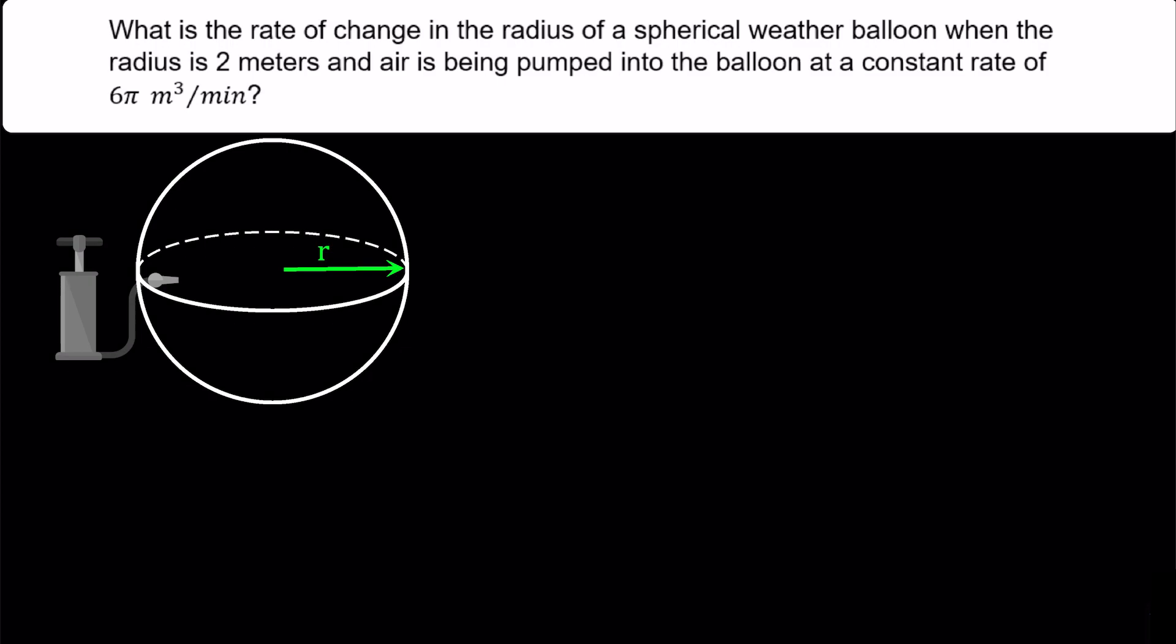Let's find the first of 4 things I mentioned earlier, which is the condition. The given condition in this problem is dV/dt equals 6π m³ per minute. The second thing to find is the question. What are they asking for? They are asking for dr/dt, specifically when the radius is 2 meters.